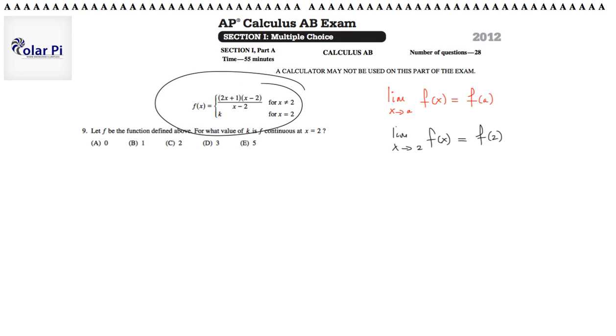Now, looking at our function f, there is clearly only one place where I could evaluate f of 2, and that is this bottom piece of the piecewise defined f. And therefore, we know that f of 2 must equal k.